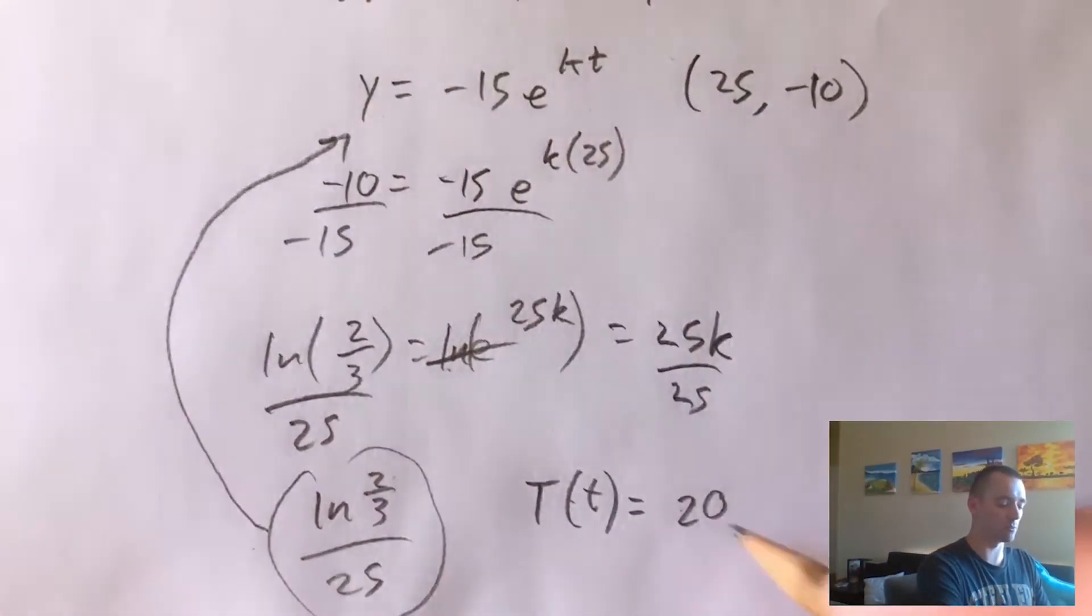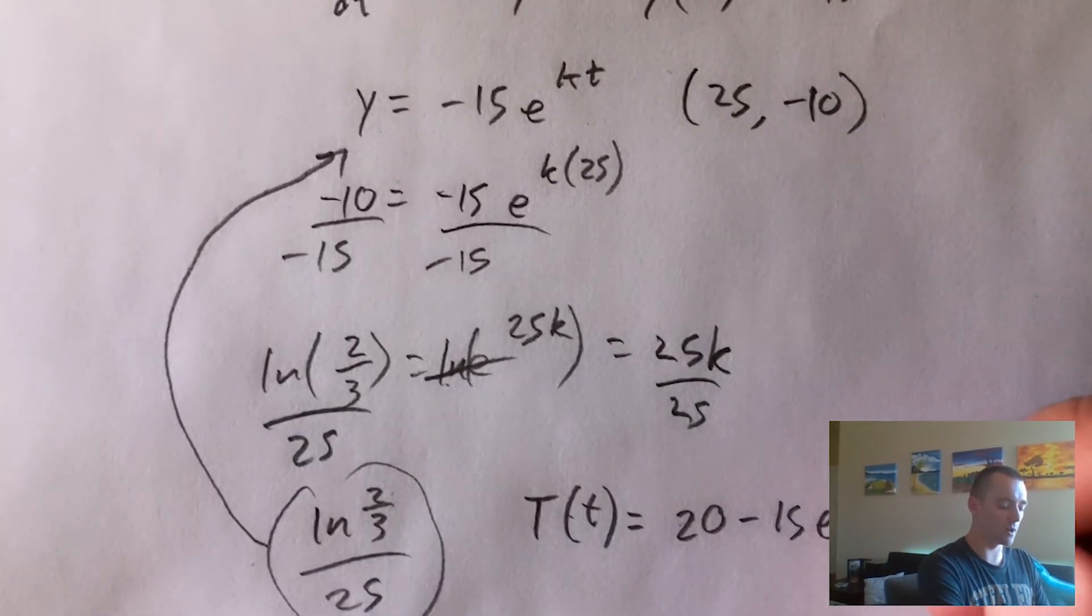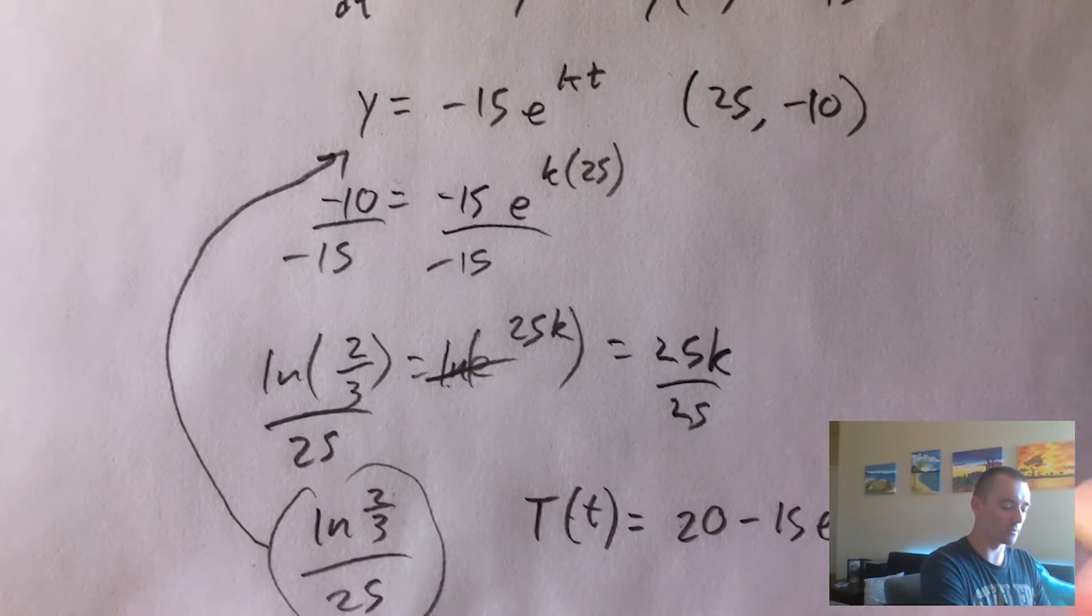So doing that is going to tell us the temperature at time t is just going to be 20 plus, or minus 15 times e to the natural log of two thirds over 25 times t.